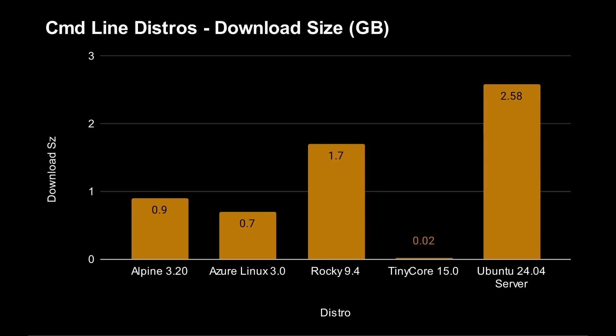The next category is command line versions of Linux primarily used for servers — where you just want to start and stop services, upload files, and so on. First, here are the download sizes: Alpine Linux is around 900 megabytes, Azure Linux 700 megabytes, minimal Rocky 9.4 is 1.7 gigabytes, and Ubuntu Server 24.04 is 2.5 gigabytes. Tiny Core is just 20 megabytes. If you're deploying many instances, the distro size may have a significant impact.